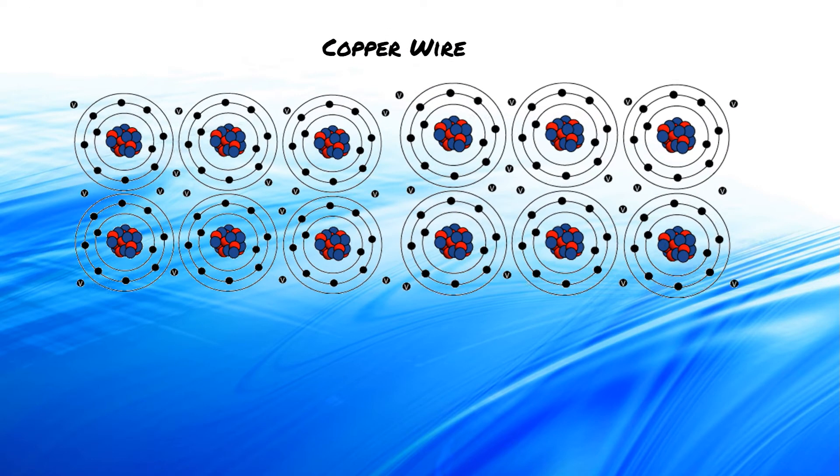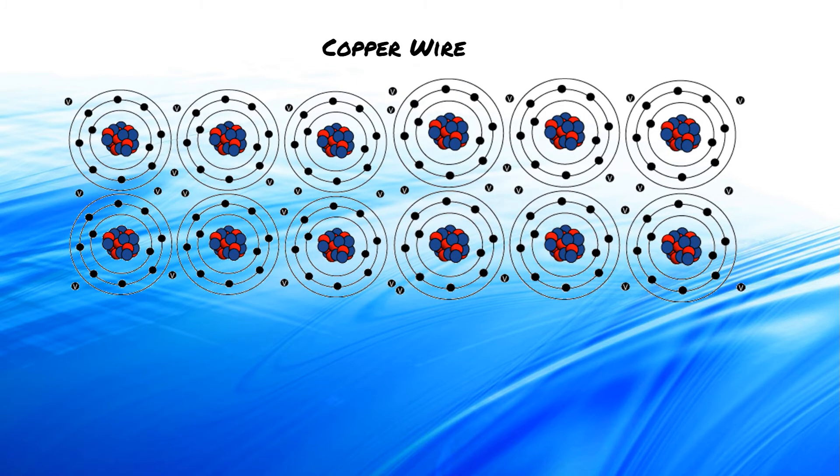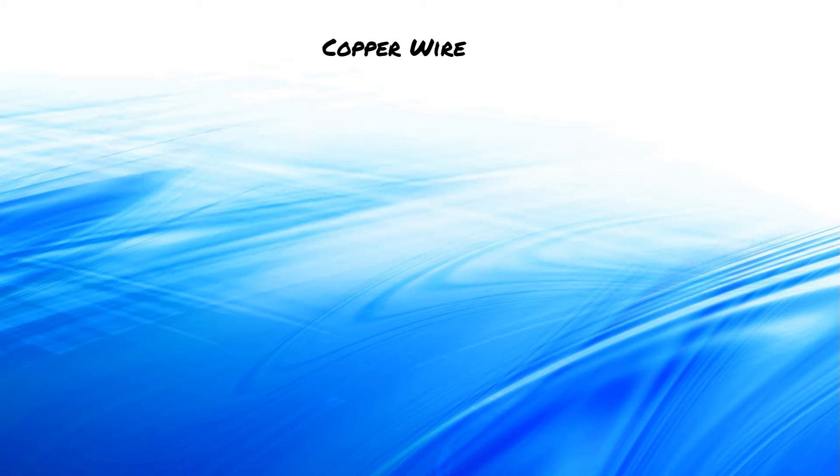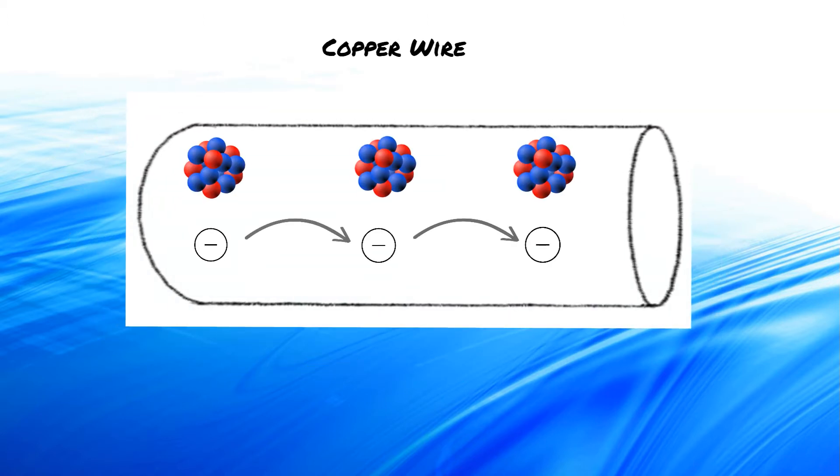I will begin by focusing on a copper wire at the atomic level. As you can see, there are positive cations floating within a sea of negatively charged valence electrons. The wire currently has a neutral charge. Now, let's get these electrons flowing to produce electricity. What happens to its charge? Let's try putting an electron next to the wire. Well, nothing happened.